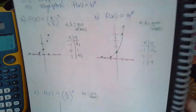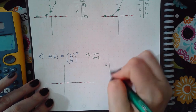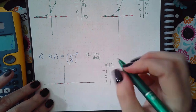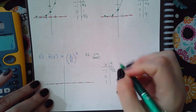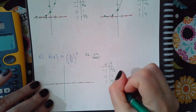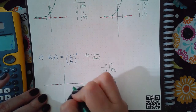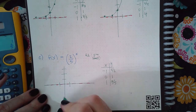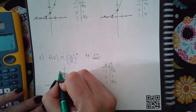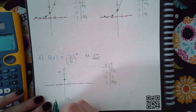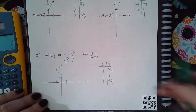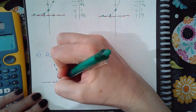For the last one, using x-values of negative one, zero, and one: the whole thing raised to the negative one gives five-halves, raised to zero gives one, raised to one gives two-fifths. So negative one and five-halves is two and a half, zero and one, and one and two-fifths is going to be pretty close to the x-axis. Notice that the curve goes in the opposite direction from the other two.